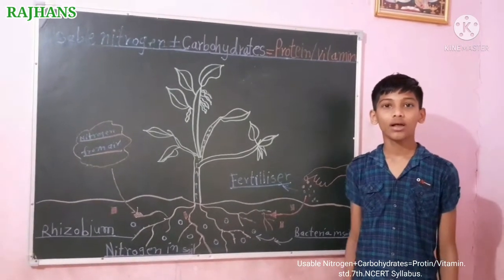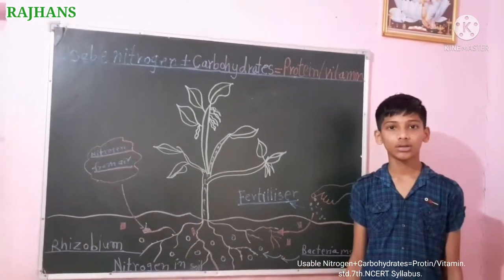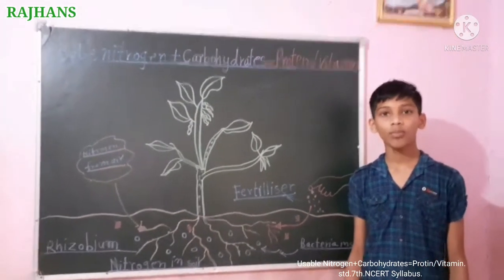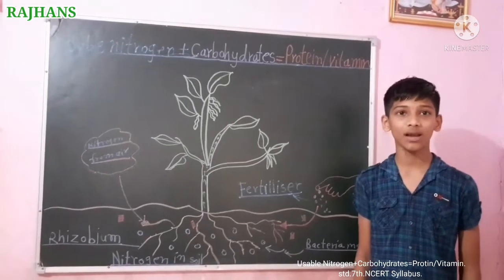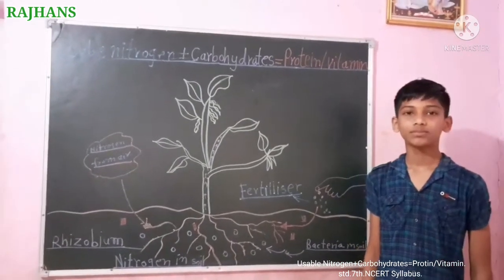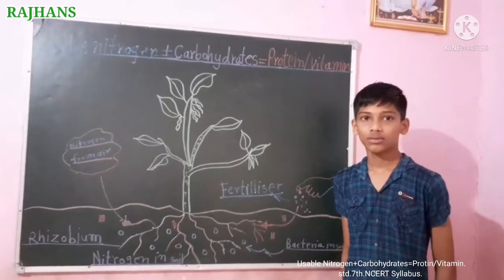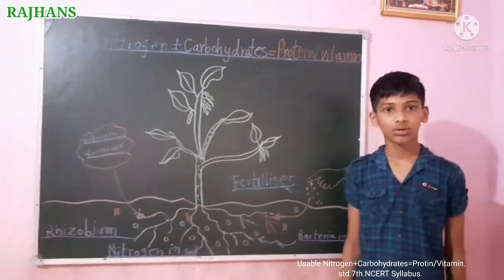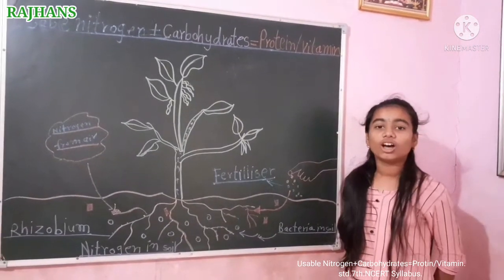Bacteria in the soil convert organic nitrogen in the soil into a usable form. In legumes, plants such as pulses have a special bacteria called rhizobium. Nowadays, farmers also add fertilizers to provide usable nitrogen in the soil.